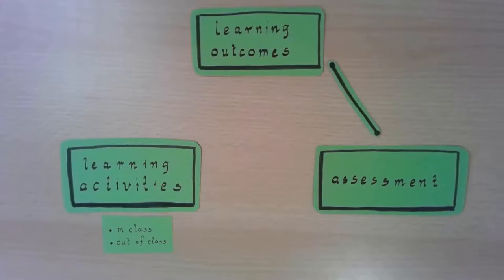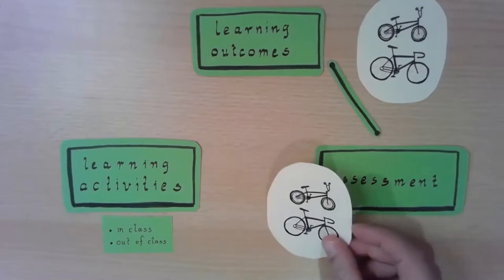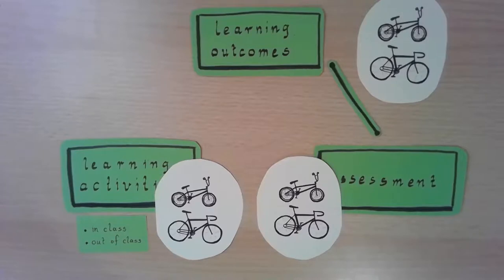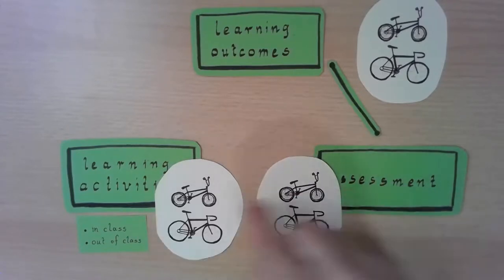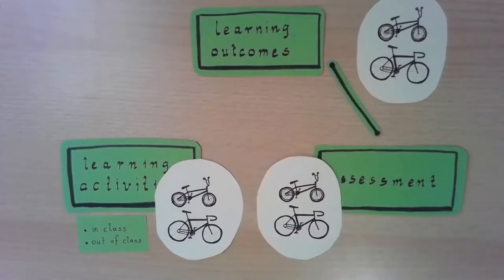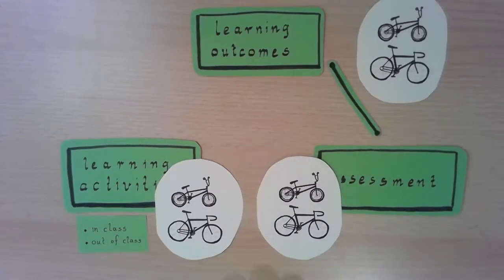If students should learn to distinguish between types of bikes, the best learning activity is to practice distinguishing between them. There are steps beforehand — learning the types and their features — but the final learning activity is to practice: look at a bike and say 'this is a mountain bike,' then correct yourself, try again. You have to practice on the exact same level as the assessment and the learning outcomes. This is something you can do in class or out of class.